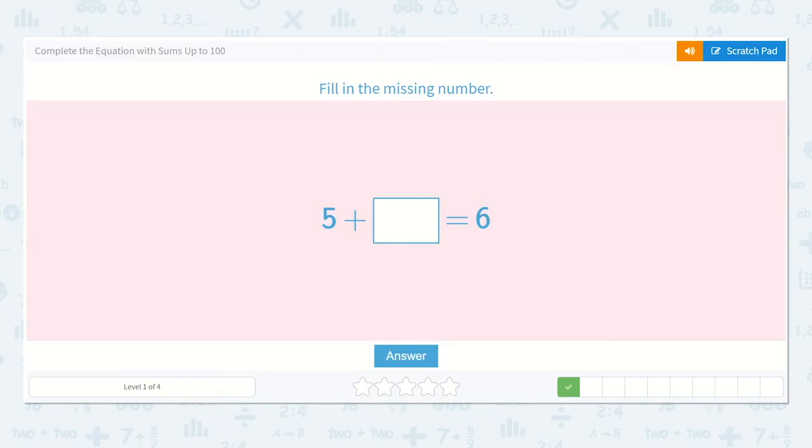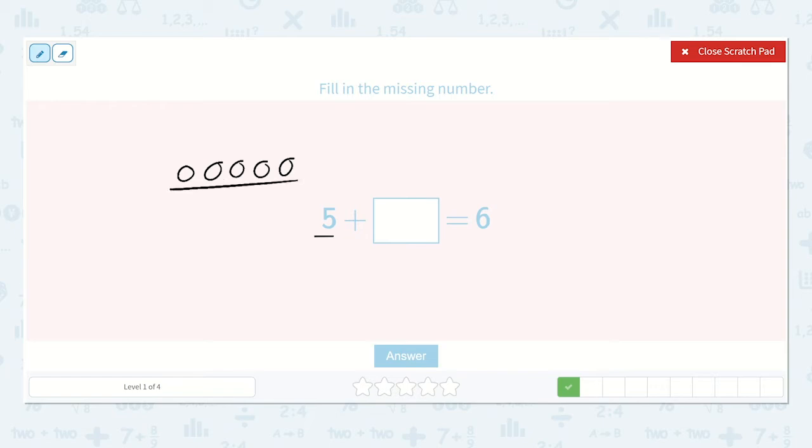Now we have 5 plus a number is equal to 6. Well, I could draw 5 dots. 1, 2, 3, 4, 5 to represent this number. How many more do I need to add until I get to 6? Well, I already have 5. So now, let's count on until we get to 6. We have 5, 6. Oh, just 1. Because 5 plus 1 is equal to 6.